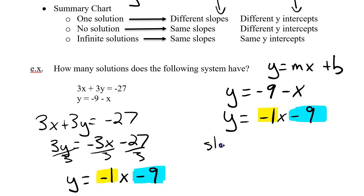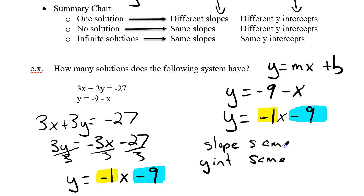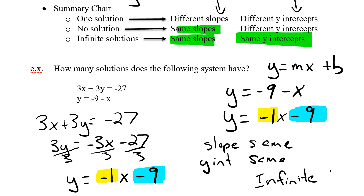So my slope is the same and my y-intercept is the same. Same slope and same y-intercept means I've got an infinite number of solutions. They are the exact same line — they would graph right on top of each other, and so there are a whole bunch of x and y values that would work.